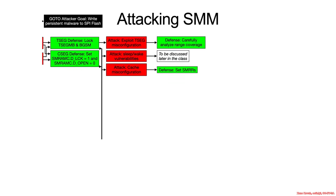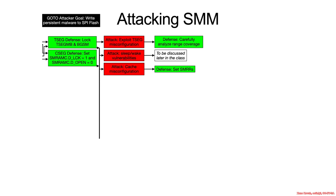Let's move our threat tree off to the side. Next, I'm going to bulk multiple attacks under an umbrella category that I'm going to call remap attacks. These have to do with when someone finds a clever way to map something else over SMM and then subsequently write into SMM.